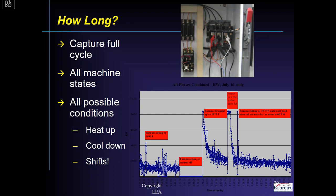Here's a real example — an electric oven where we got all three phases of current and voltage, so we can calculate true power and energy use. What we wanted was to capture a full machine cycle. The furnace is idling at 1600°F — one view of energy use. Then the furnace is opened and has no energy use. Then it's brought up to temp — a different energy profile. Then product is put in and it takes a lot to bring it up to temp — yet another profile. Make sure you get all machine conditions: heat-up, cool-down, all shifts.